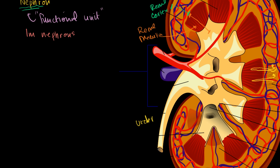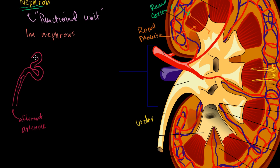Let me draw a nephron, starting with the blood flow. Blood comes in through an arterial capillary — this is called the afferent arteriole. Then it goes into this big winding structure called the glomerulus. And then it leaves via the efferent arteriole. Efferent means away from the center; afferent means toward.